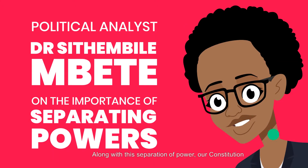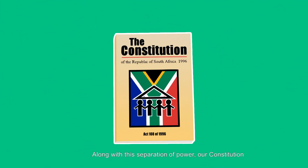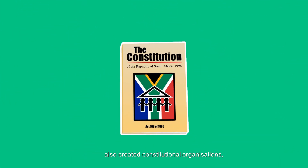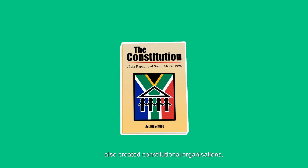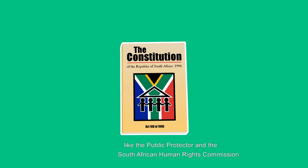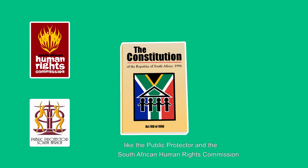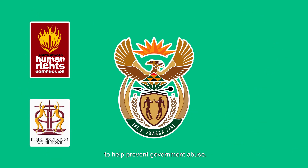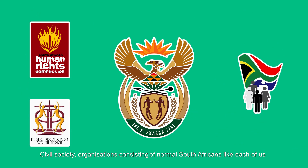Along with this separation of power, our constitution also created constitutional organizations like the Public Protector and the South African Human Rights Commission to help prevent government abuse. Civil society organizations, consisting of normal South Africans like each of us, also plays a vital role in holding the government to account.